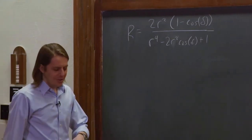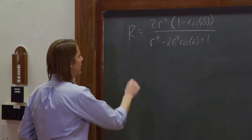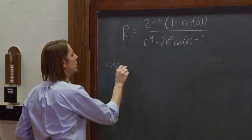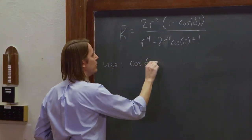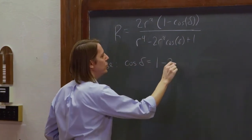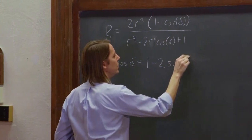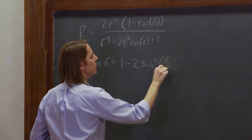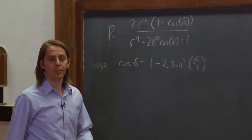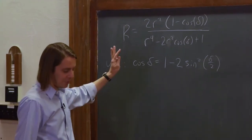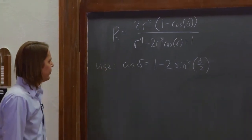So it's hard to see anything useful there. So you say you use cos δ = 1 - 2sin²(δ/2). So that's not anything to do with our physics, that is just a trig identity.